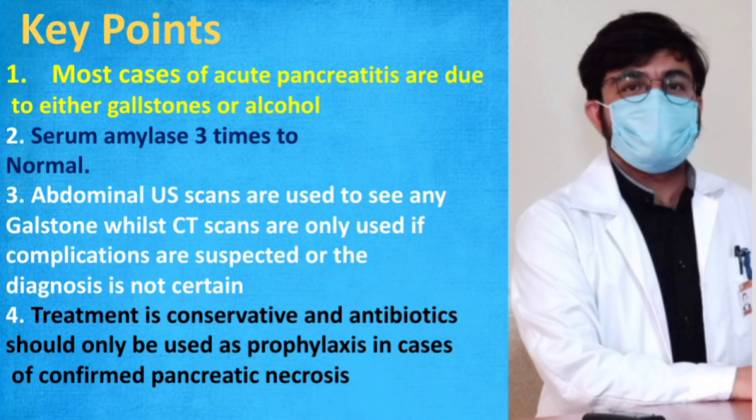Key points: most cases of acute pancreatitis are due to either gallstones or alcohol. Serum amylase is elevated three times above normal. Ultrasound is only used to identify gallstones, while CT scan is only used if complications are suspected or diagnosis is uncertain. Treatment is conservative, and antibiotics should only be used as prophylaxis in cases of confirmed pancreatic necrosis.